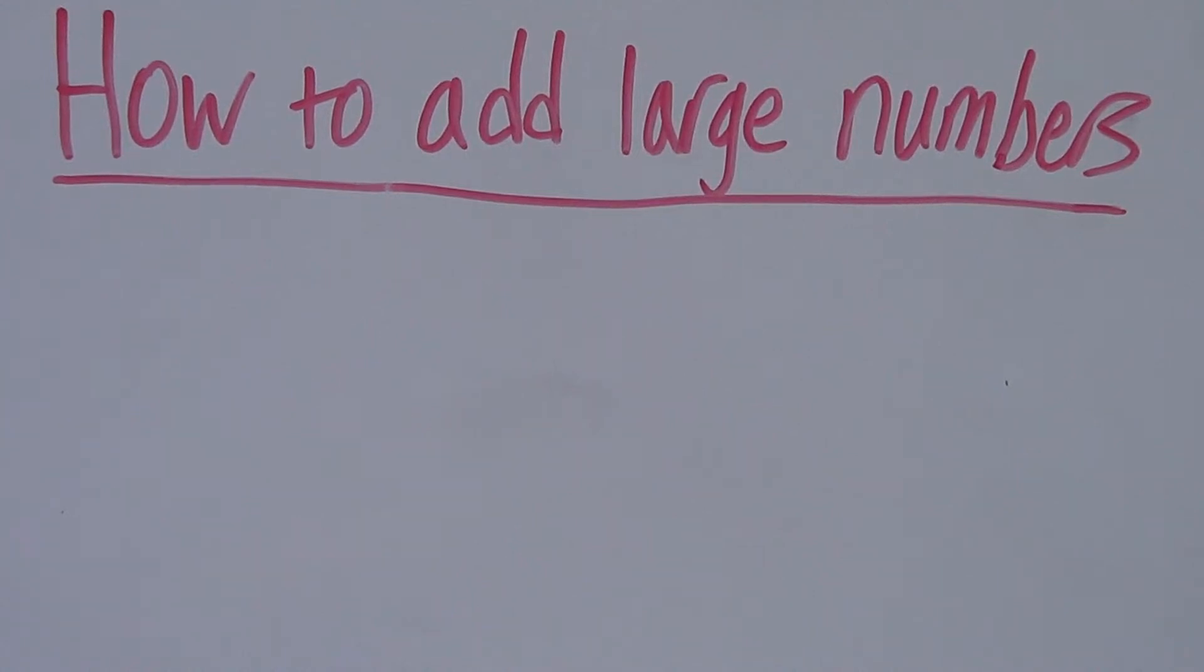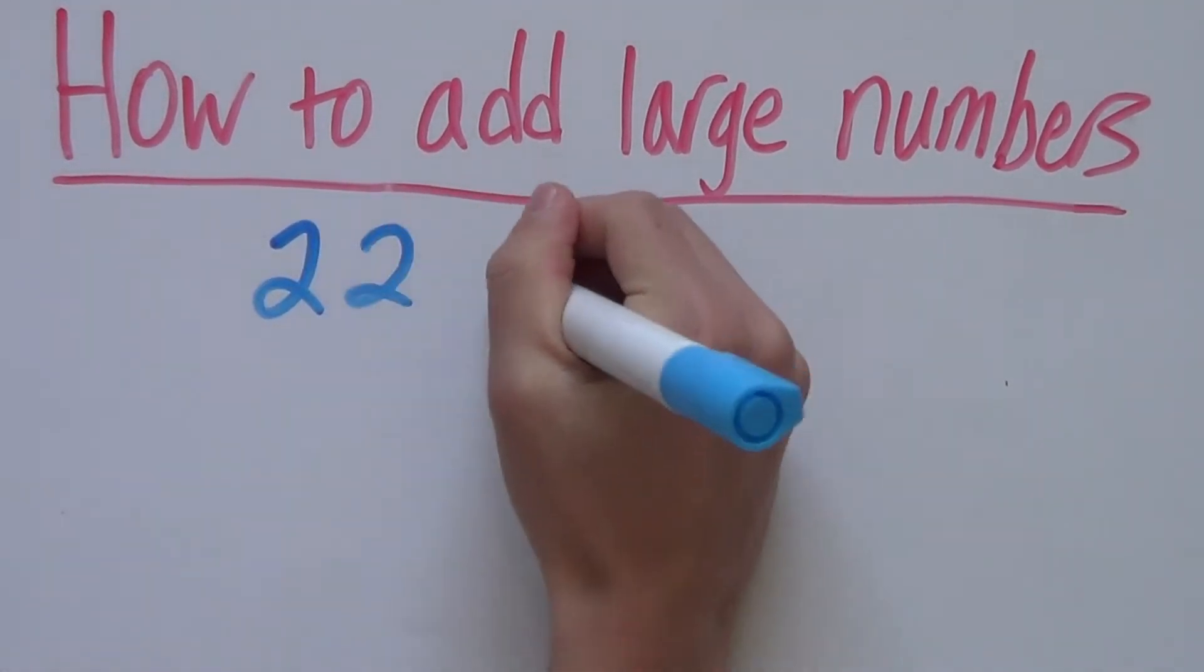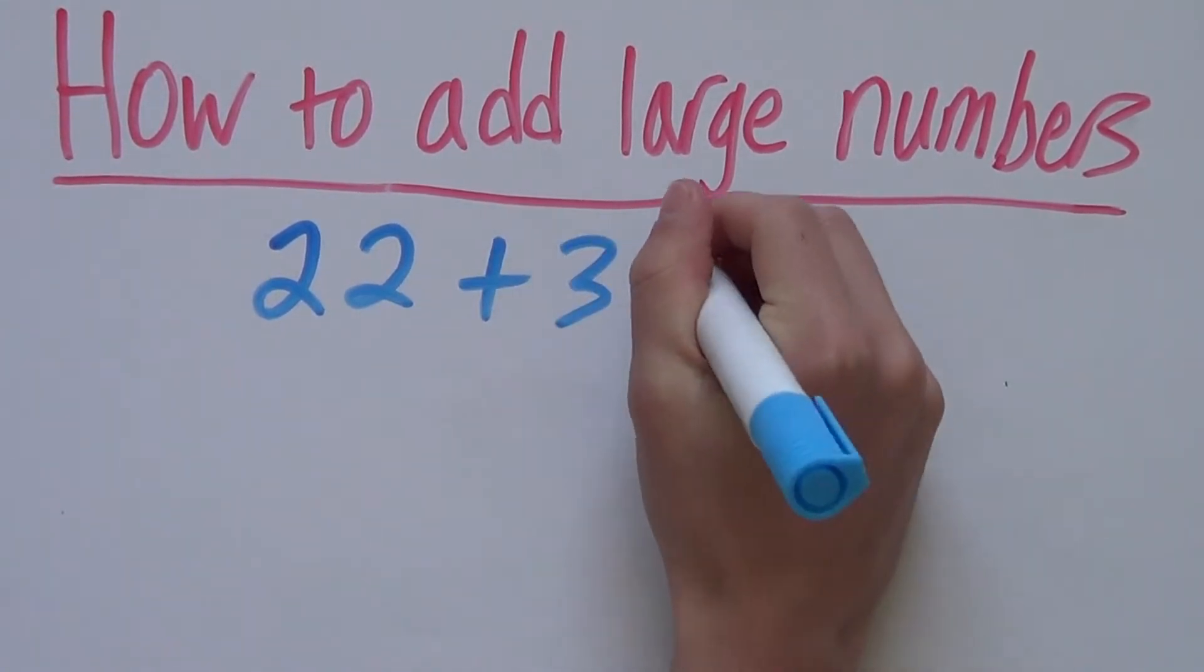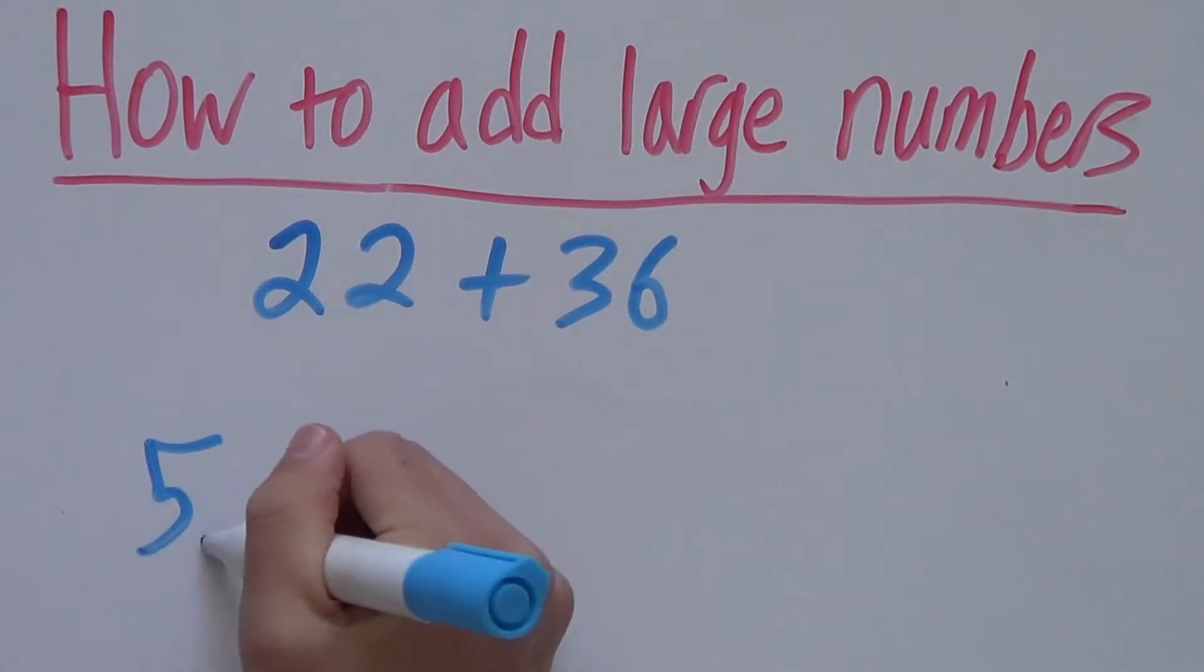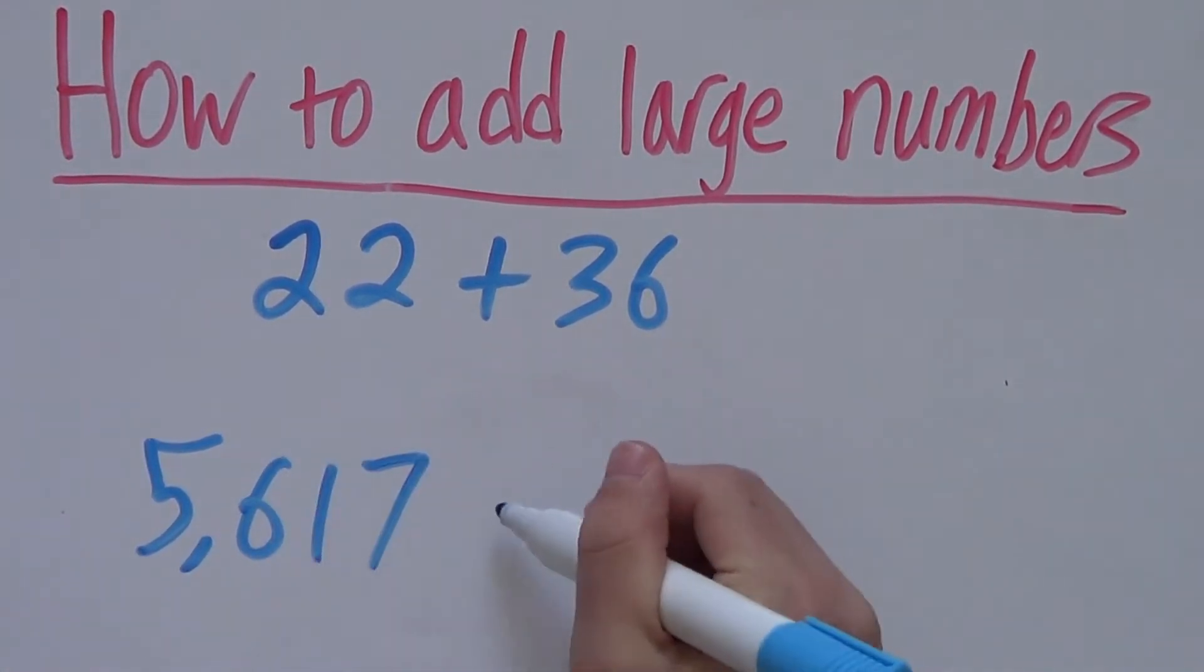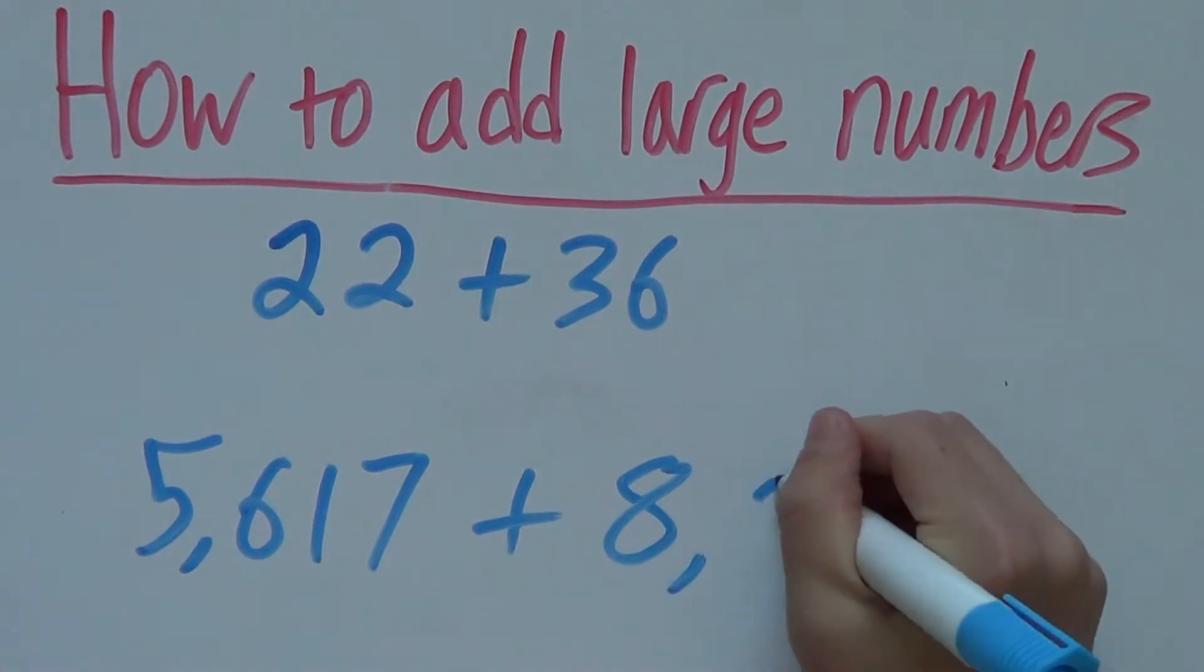Hello and welcome. In this video, we're going to learn how to add large numbers together. These large numbers can be anything from something like 22 plus 36 or even something big like 5,617 plus 8,200.